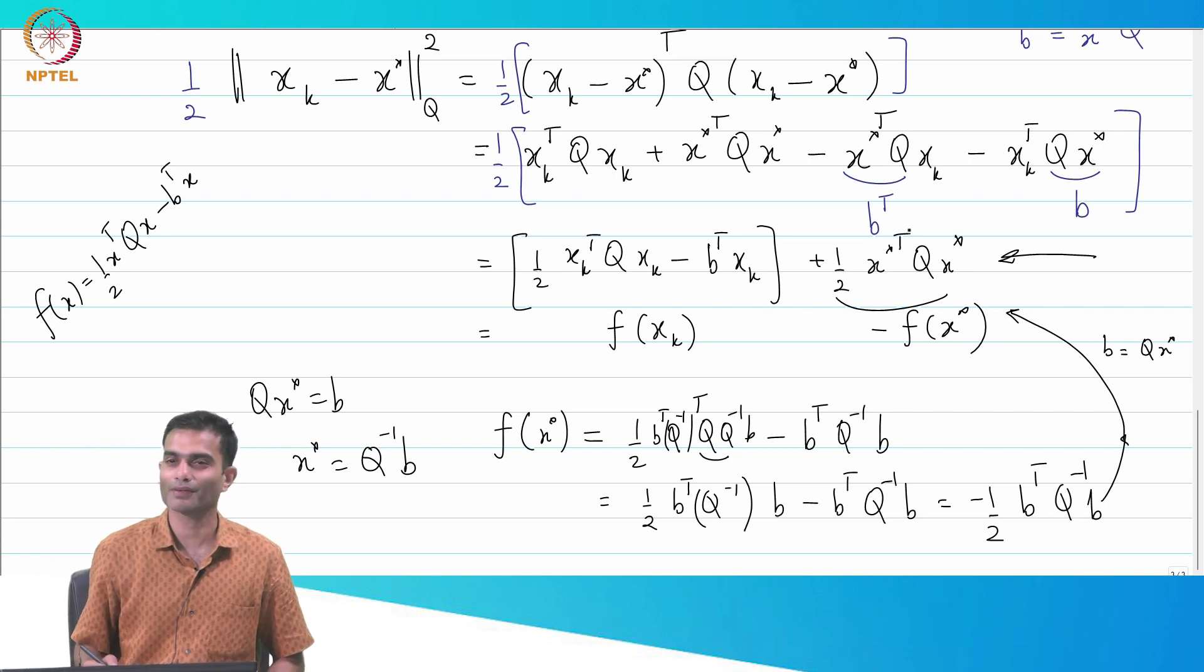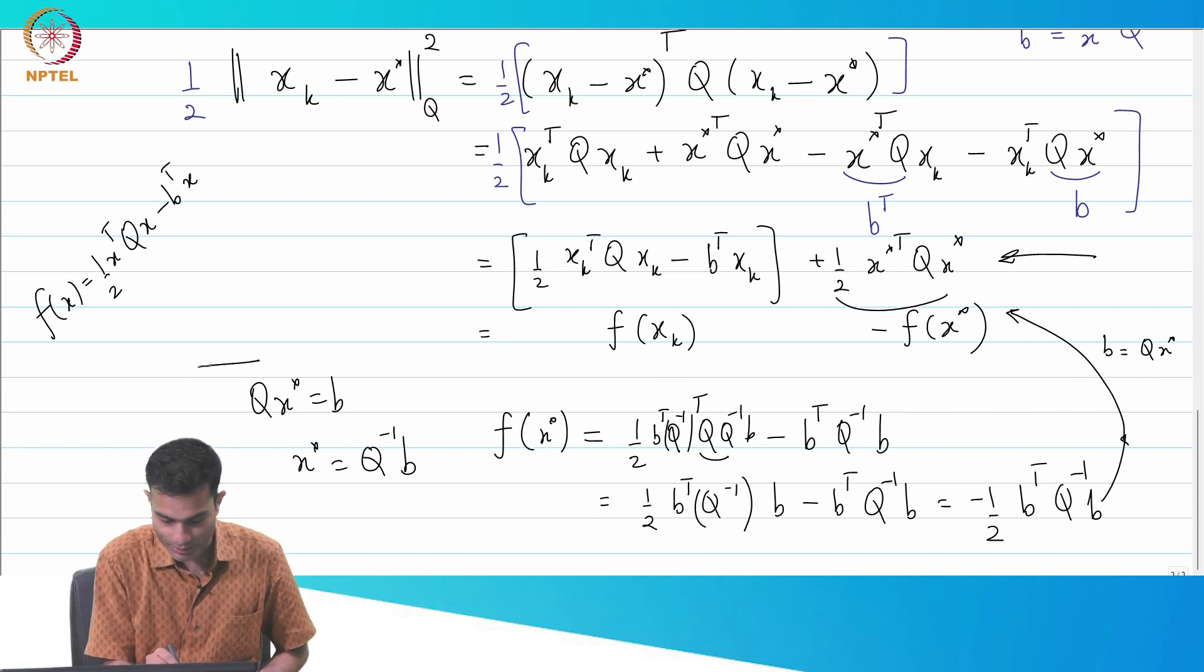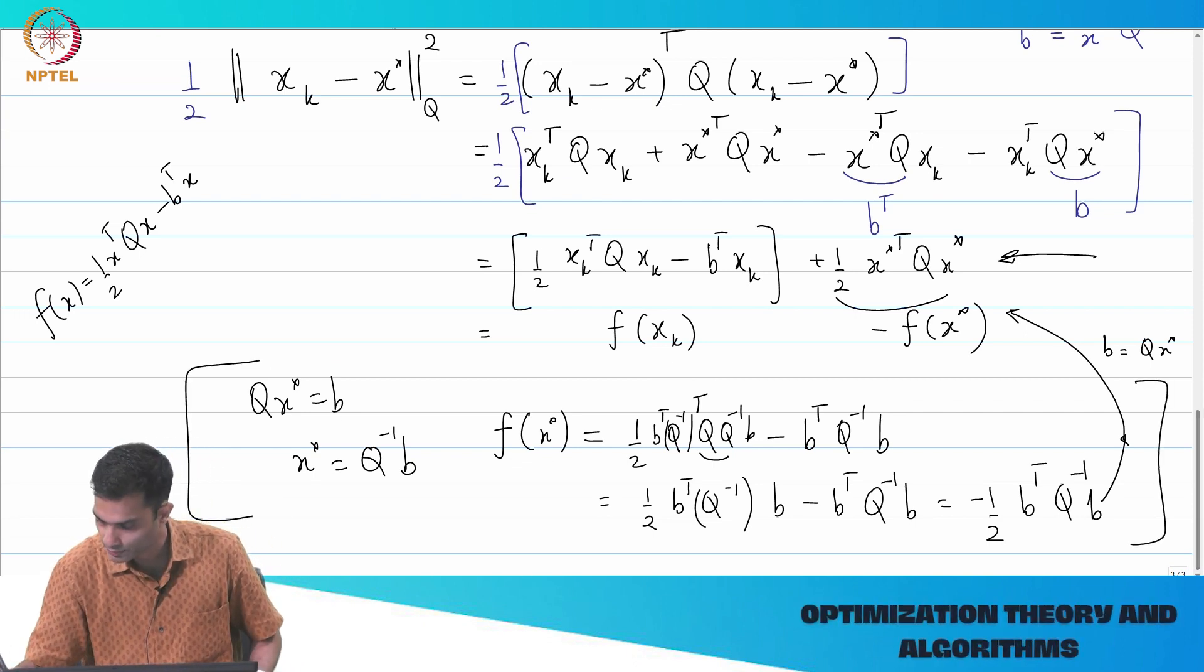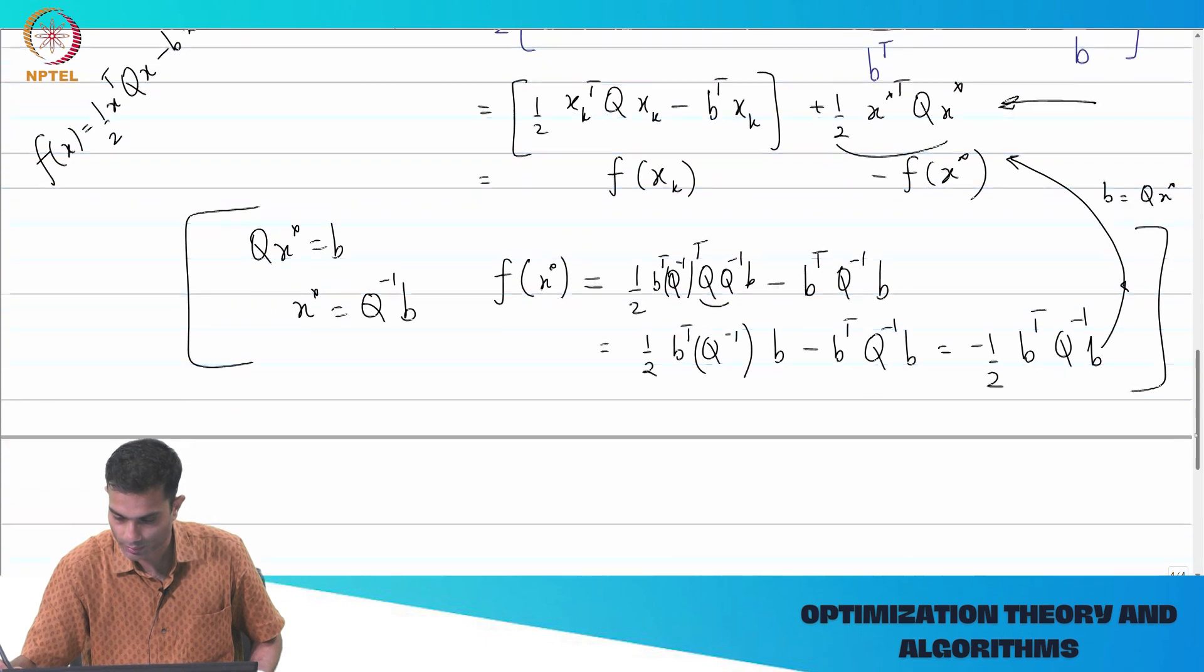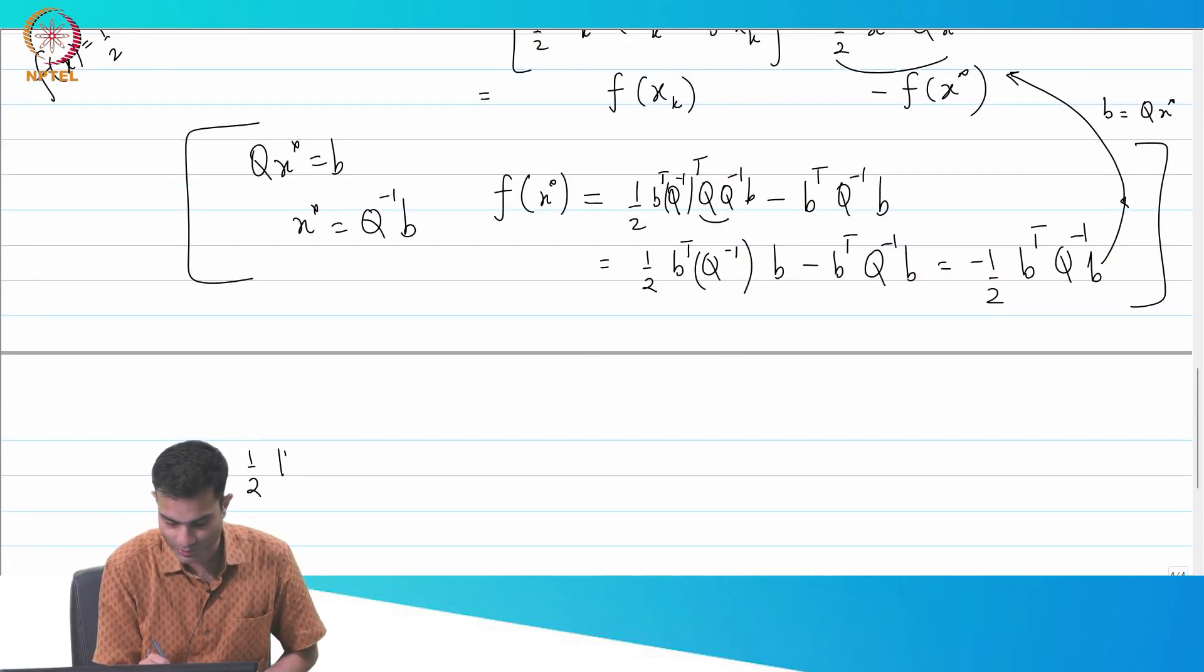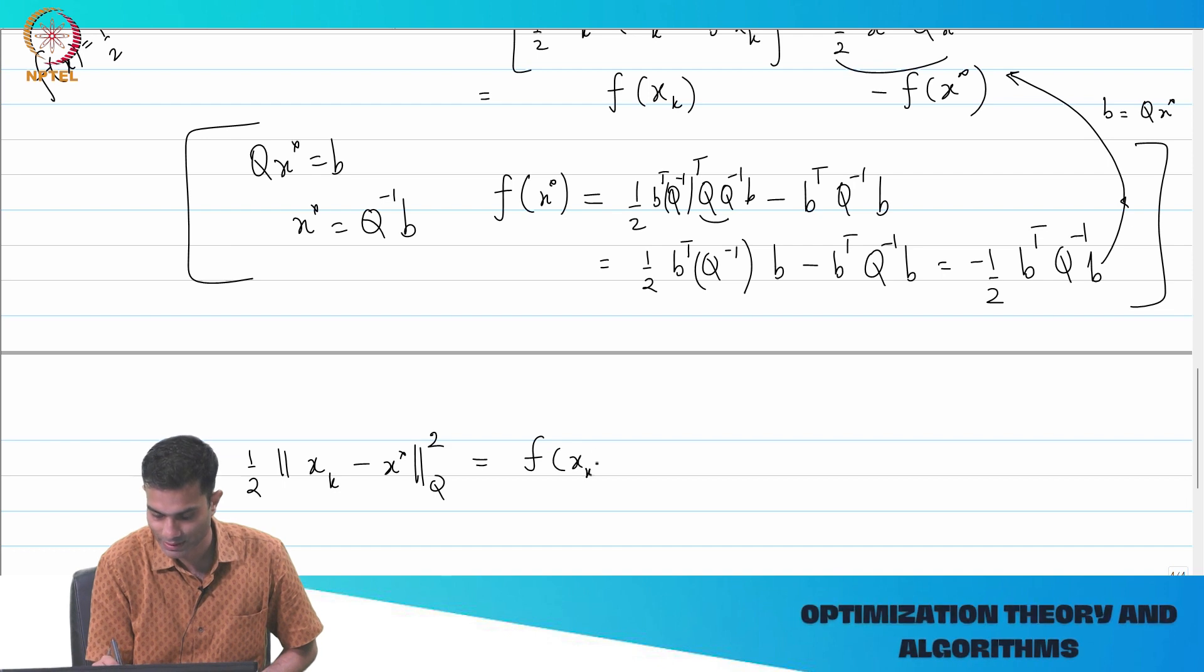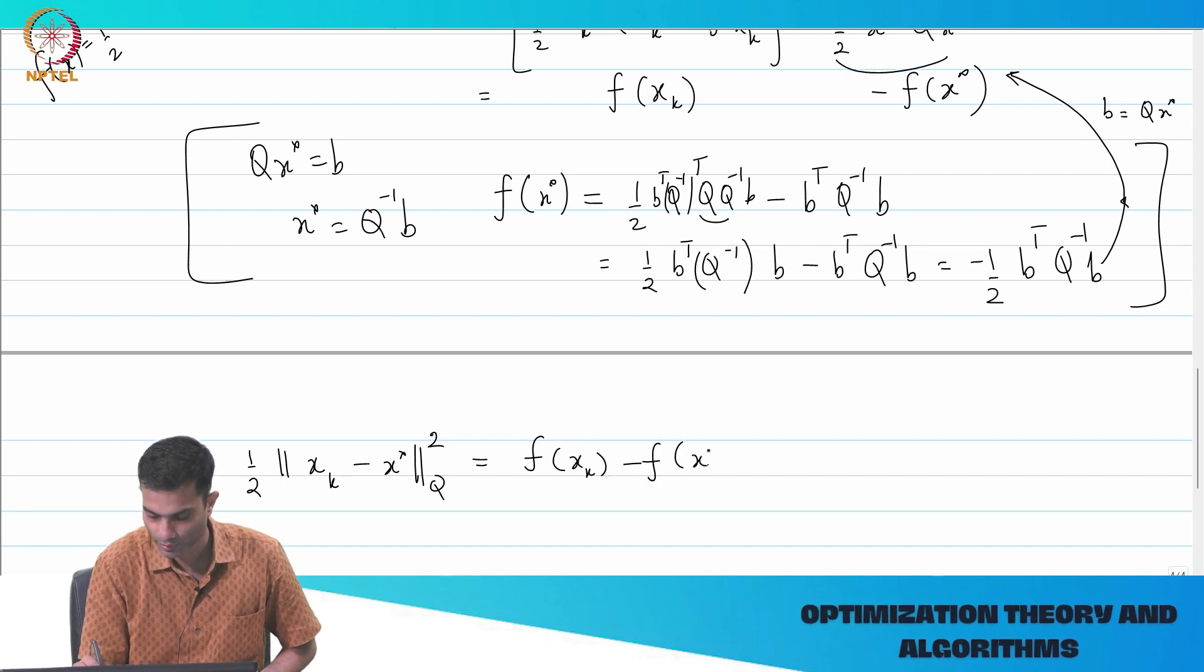Then, what does this become? Half of b transpose Q inverse b. I am still not there yet. I want this expression. What do I do next? So, substitute, I can substitute b as Q x star. So, now, if I substitute b equal to Q x star, I am going to get exactly this expression. So, little bit of algebra, right, but we get this expression.